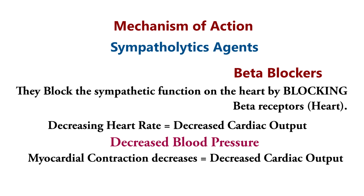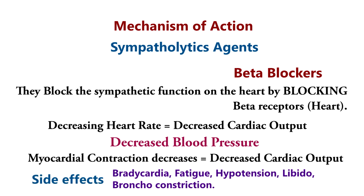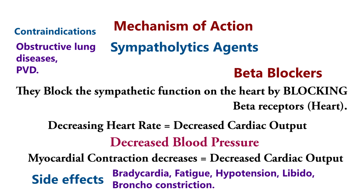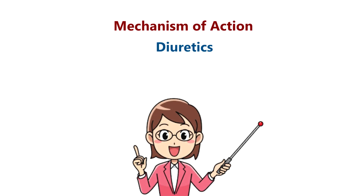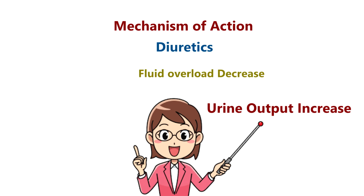Beta blockers' side effects include bradycardia, fatigue, hypotension, decreased libido, and bronchoconstriction. Mechanism of action of diuretics: Diuretics increase urine output, which decreases fluid overload and lowers blood pressure.